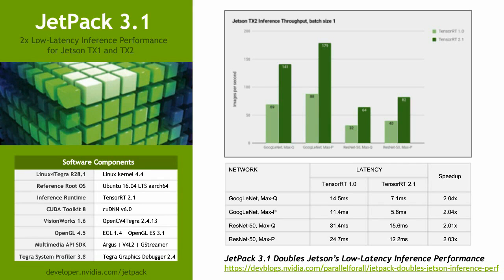JetPack can actually achieve much higher throughput with batch sizes up to 128 thanks to its 8 gigabytes of main memory. But the downside of the higher batch sizes is increased latency as you accumulate the necessary frames for processing. TensorRT2 doubles the performance of single-batch inferencing as compared to the previous version, TensorRT1. Single batches are often used by real-time constrained applications that need access to inferencing results as soon as possible with minimal latency. With JetPack 3.1, the latency of GoogleNet is down to 7 milliseconds in Max-Q mode and 5.5 milliseconds in Max-P mode. Look out for our upcoming posts on NVIDIA's Parallel for All blog — JetPack 3.1 doubles Jetson's low latency inference performance — for more discussion of TensorRT2.